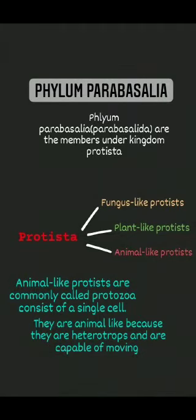Phylum Parabasalia are the members under Kingdom Protista. Kingdom Protista are classified into three: fungus-like protist, plant-like protist, and animal-like protist. Animal-like protists are commonly called protozoa. They consist of a single cell and are animal-like because they are heterotrophs and are capable of moving. A heterotroph is an organism that eats other plants or animals for energy and nutrients. Usually their movement is possible by cilia or flagella.